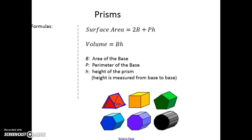Surface area is how much paint you would need if you were going to paint the whole prism — like painting a block. We say surface area equals 2 times capital B, which is the area of the base, plus the perimeter of the base P, times the height of the prism. The height is measured from base to base. So that's how you find surface area: two times the area of the base, plus the perimeter of the base times the height.